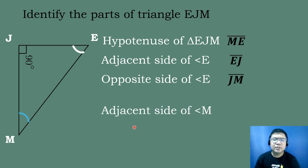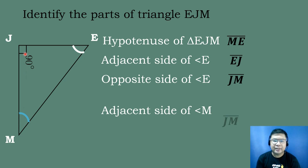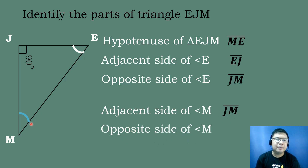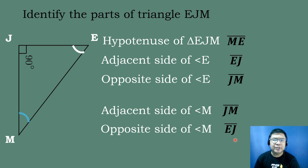Now let's look for the adjacent side of angle M. If angle M is the given angle, the adjacent side is the side in between angle M and the right angle, which is segment JM. For the opposite side of angle M, it is segment JE or segment EJ. So that's how we can identify the parts of a right triangle.